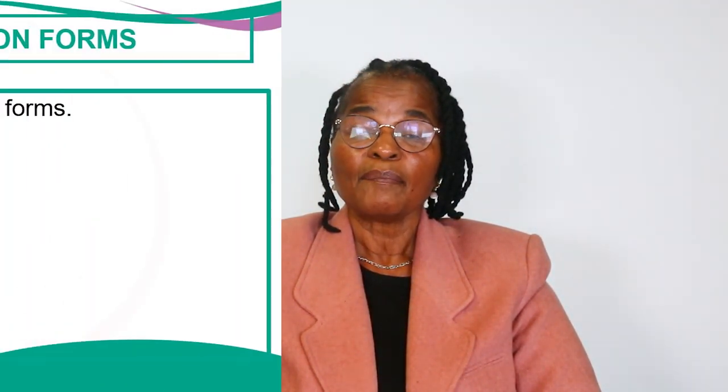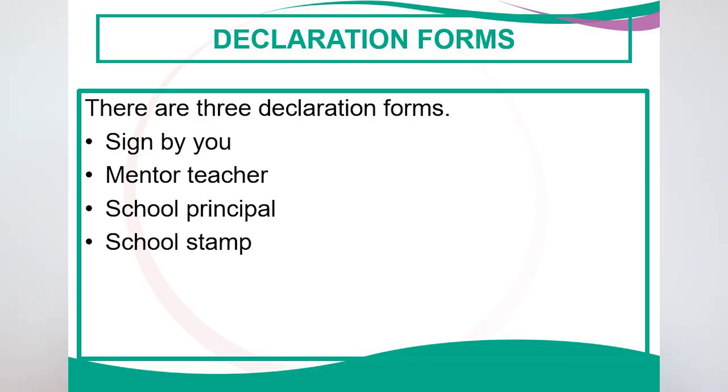Make sure you do the correct thing because tutorial letter 103 is very clear — follow it correctly. The declaration forms need to be signed by you, your mentor teacher, the school principal, and must have a school stamp. Declaration forms without a school stamp mean you were not at school. Do not cut and paste a school stamp — if you commit this fraudulence you may be suspended.